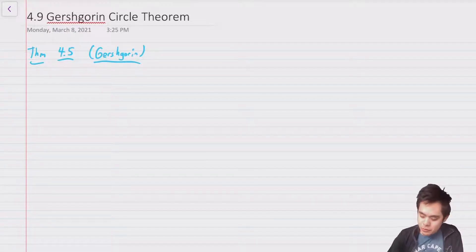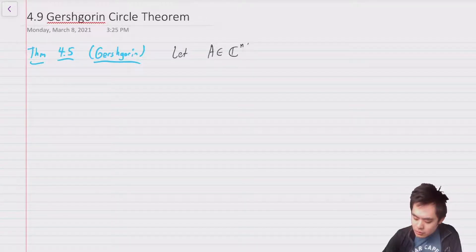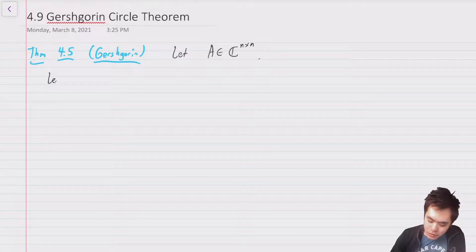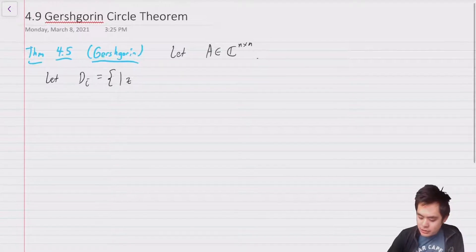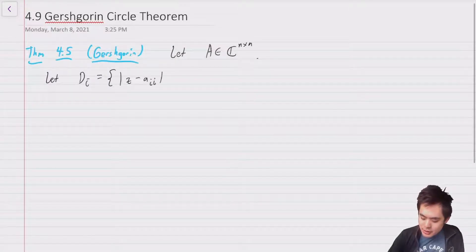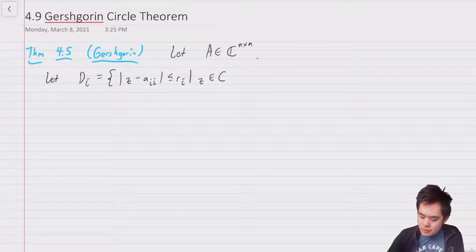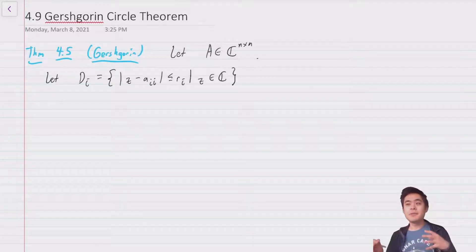So the Gershgorin circle theorem. The statement of the theorem is if we have a matrix, which I'm going to give it in broader generality, so this is going to be a complex matrix, so all the entries of the matrix are complex. And then we're going to define a disk, we're going to let D_i be equal to the disk for all z such that |z - a_{ii}| ≤ r_i for z in the complex numbers.